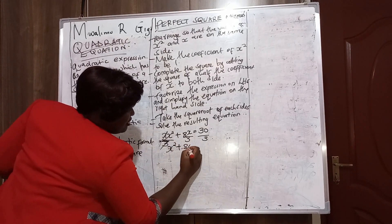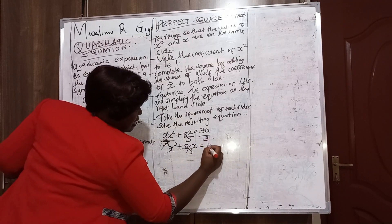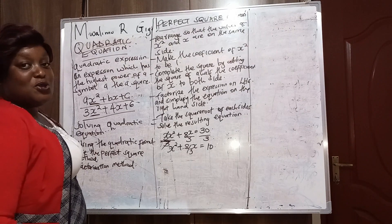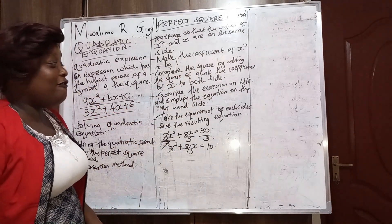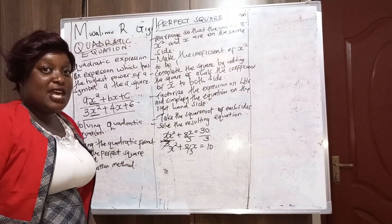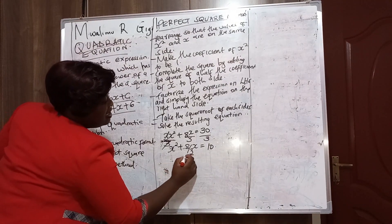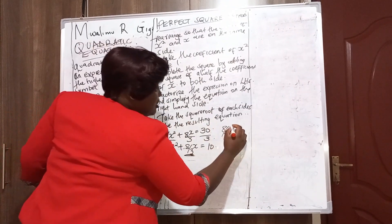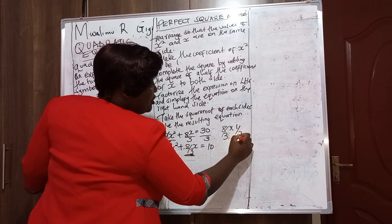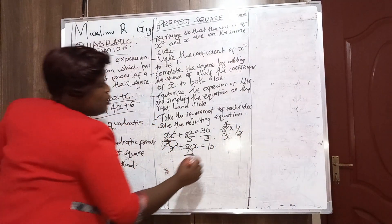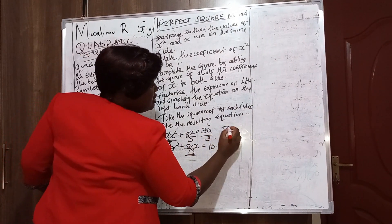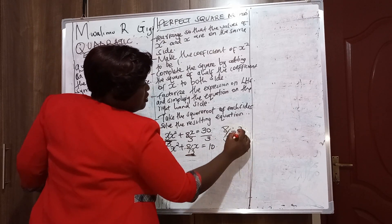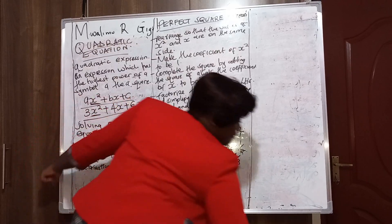So x² + (8/3)x = 10. The coefficient of x squared is 1. We go to the next step: complete the square by adding the square of half the coefficient of x to both sides. The coefficient of x is 8/3, so half of 8/3 is 8/3 × 1/2 = 4/3.